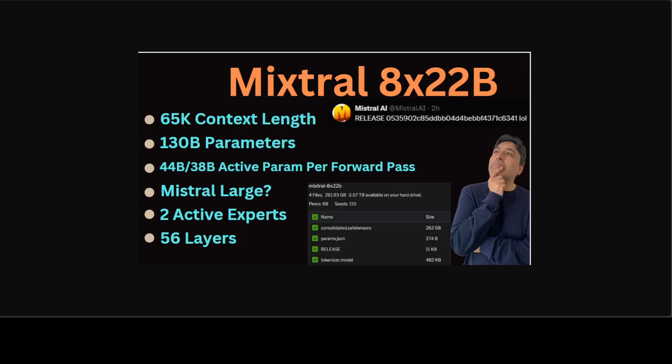Let me try to explain all of these terms in simple terms so that everyone would be able to understand. When we say that the model has a context length — in this case, Mixtral 8x22B has 65,000 context length — it means that it is the number of previous words or tokens that the model considers when generating or predicting the next word in a sequence. This context allows the model to capture dependencies and patterns in language more effectively.